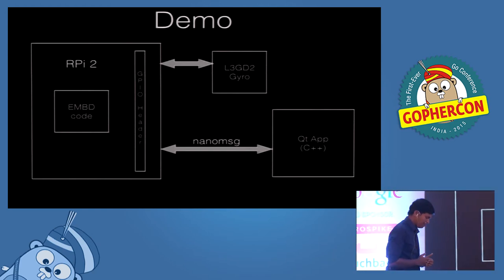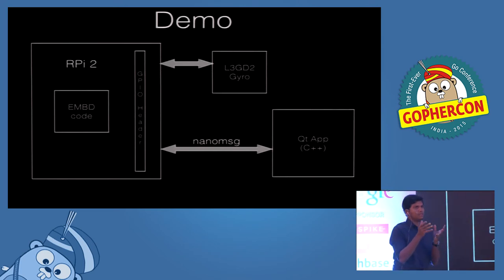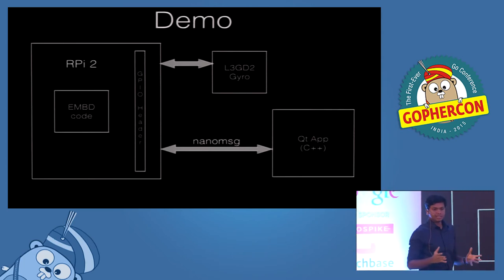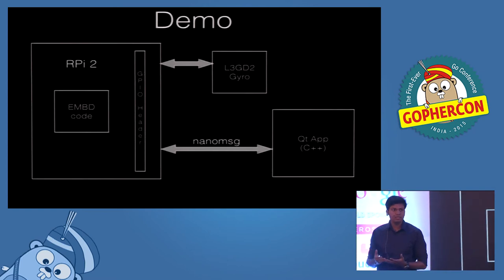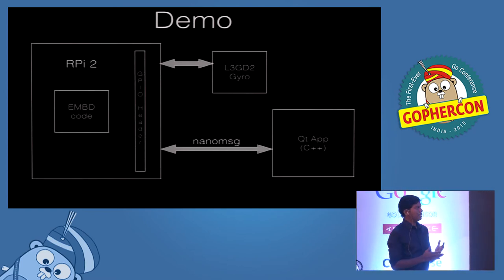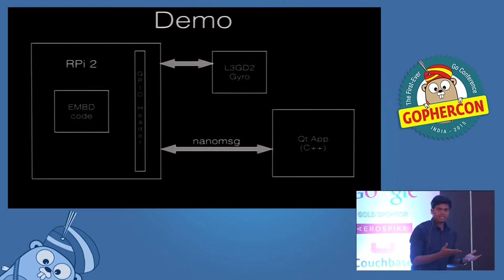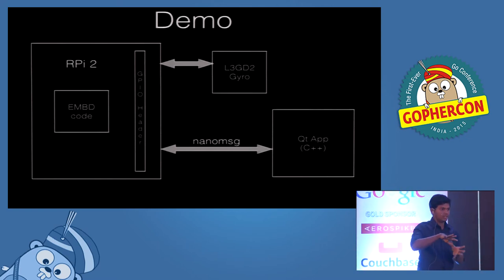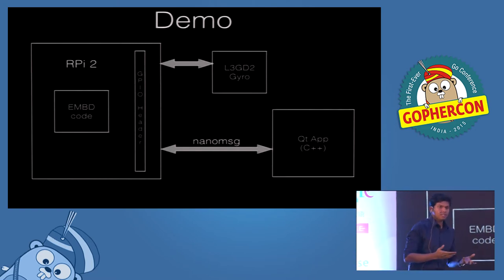The point of this demo is to talk about the gist of Embed — why Embed? People will argue that embedded systems has been there for a long time. People have been using C to write embedded systems and the performance is just great. That's true, there's nothing wrong with that. Embed, which is entirely written in Go, might not really match the performance you would get in embedded code written completely in C. But why would someone use Embed?